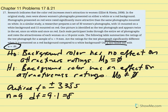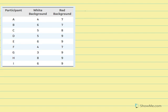What we're going to do now is use the raw data to calculate our sample mean difference — this is not given, so we have to calculate it. Here's the raw data: we have participants A through I, each with two X values. The white background is X1 and the red background is X2.